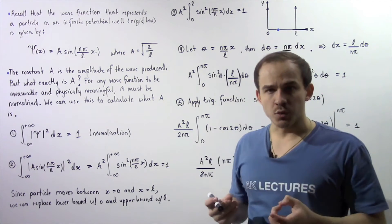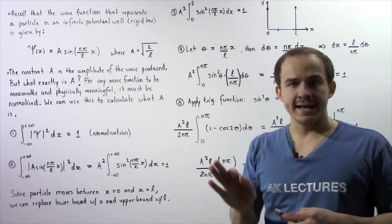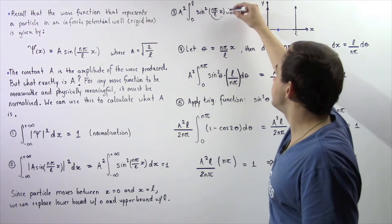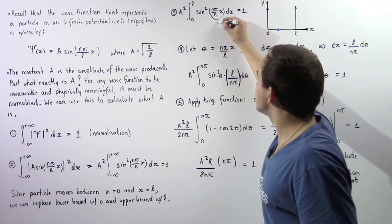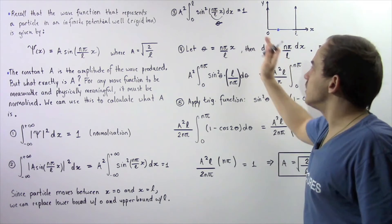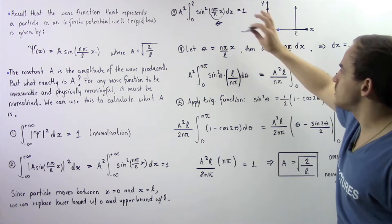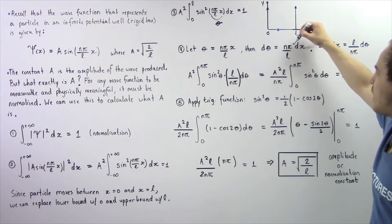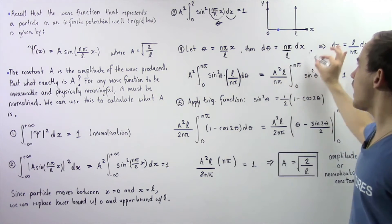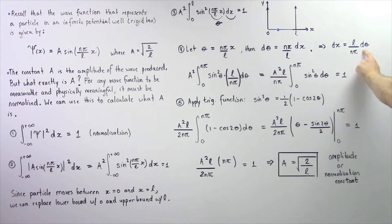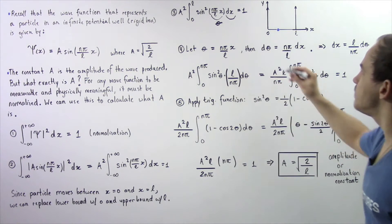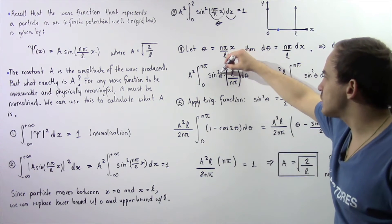To solve this integral, we replace x with the angle theta. We set theta equal to nπ divided by L multiplied by x, so the inside of the sine becomes simply theta. Taking the derivative of both sides gives dθ = nπ/L · dx, so rearranging: dx = L/(nπ) · dθ. We replace dx with this expression and the inside of the sine squared with simply theta.